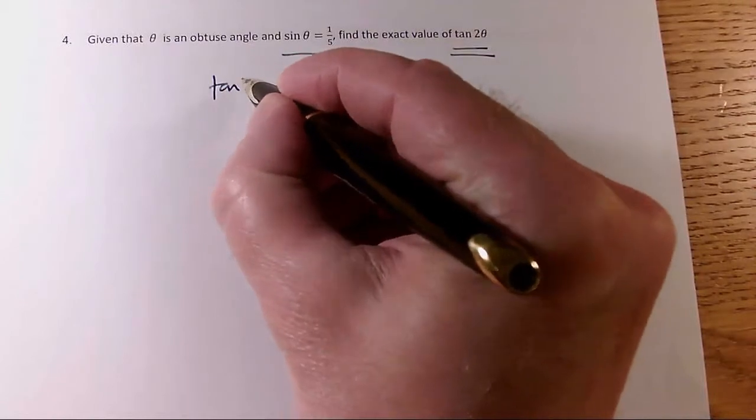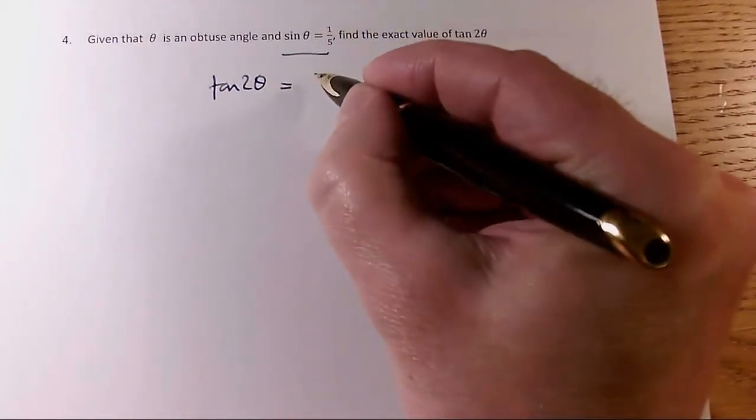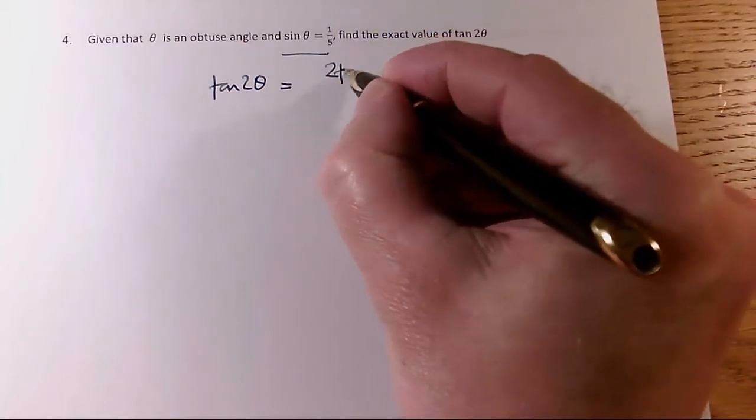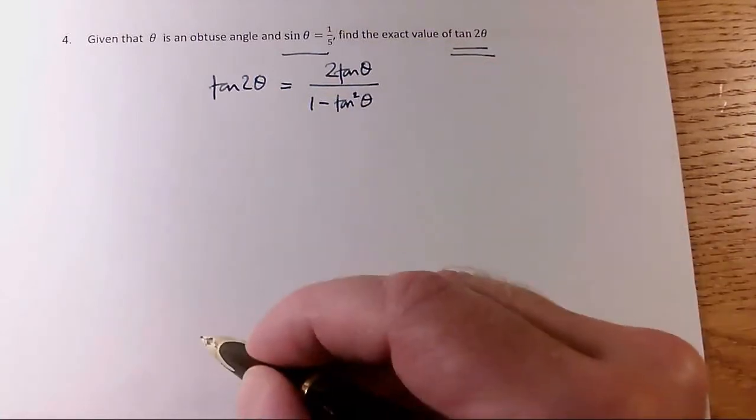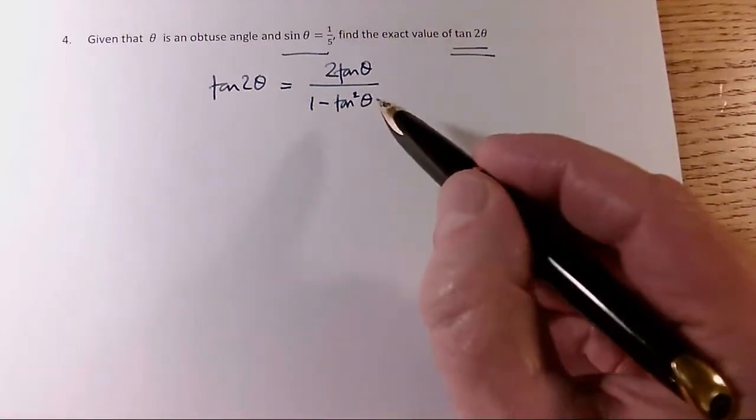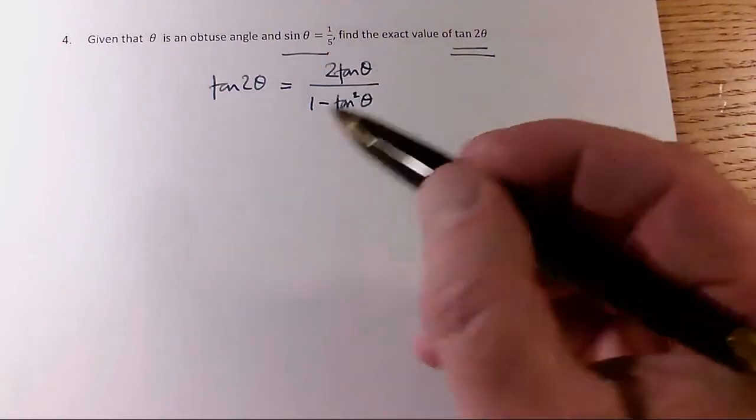What do I know about tan 2θ? Well, I've learned my double angle formula, so I know that it's 2 tan θ over 1 minus tan² θ. You need to know that too. But this isn't much use to me until I know what tan θ is. Now I know what sin θ is. How do I get tan θ? I draw a little triangle.